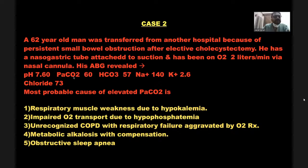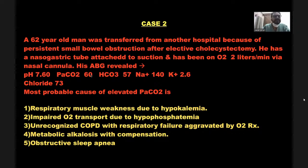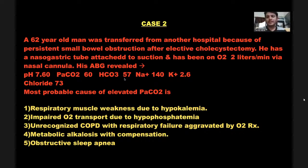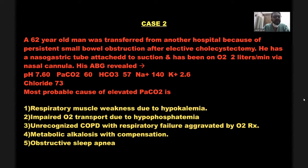There is no problem with respirations here — CO2 is exactly correlating with pH 7.60. Bicarb is 57, clearly elevated, confirming metabolic alkalosis. Potassium is 2.6 (hypokalemia) and chloride is 73 (hypochloremia), which we are losing because of continuous GI loss via NG suction. Two other points helping in diagnosis are hypokalemia and hypochloremia — so this is hypochloremic, hypokalemic metabolic alkalosis. The respiratory muscle weakness due to hypokalemia could also contribute to CO2 retention.